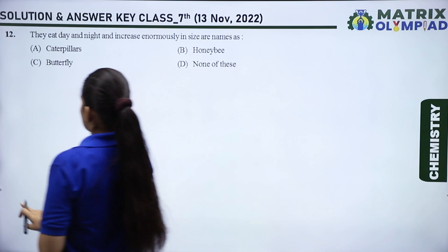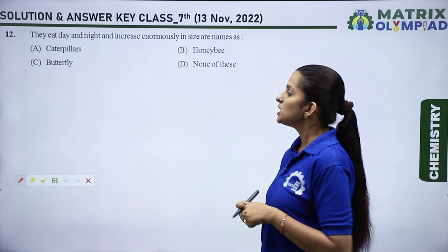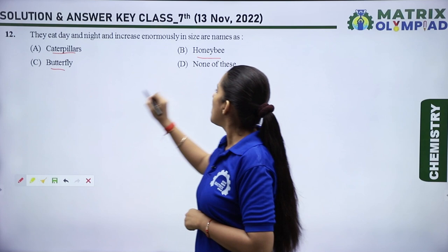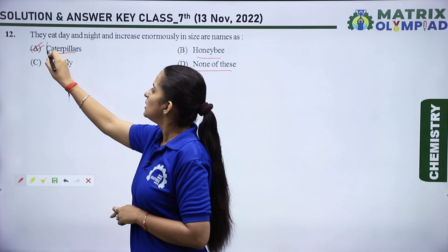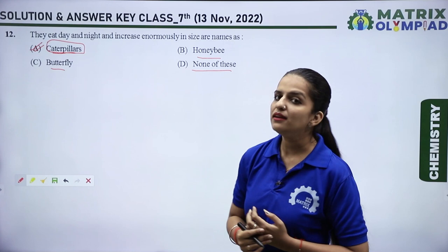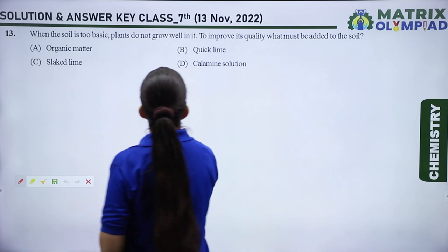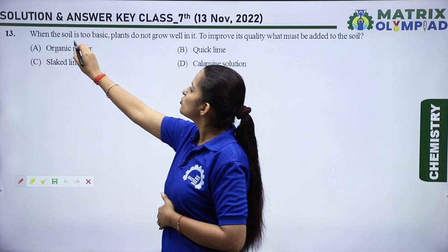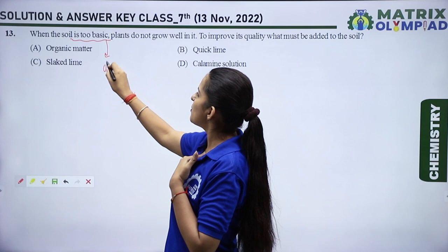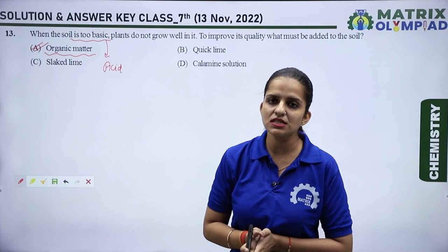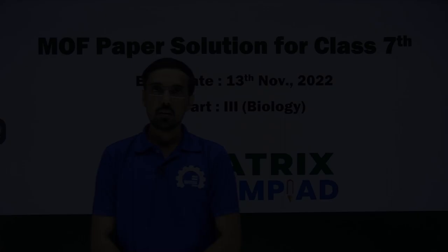Next question: caterpillars eat day and night and can increase enormously in size. Option A — caterpillar — is correct. The last question: when soil is too basic, plants do not grow well. To improve its quality, we must add an acidic compound. Among the four options, organic matter is acidic in nature, so we must add organic matter to neutralize the basic soil. Option A is correct.